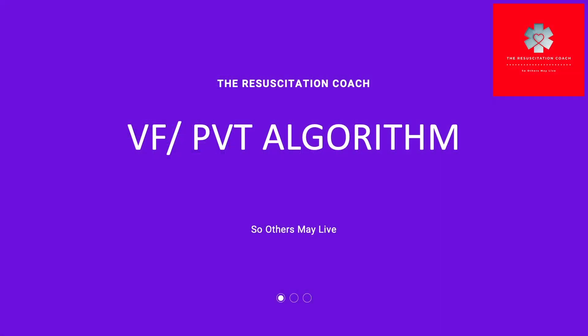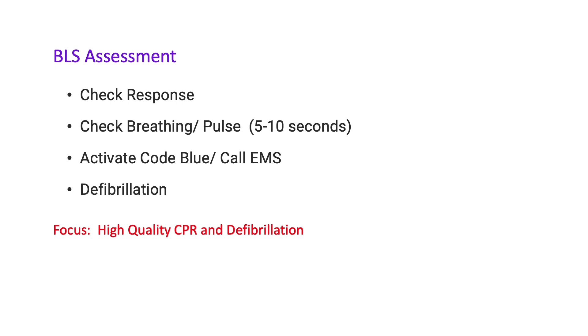If we respond quickly and effectively in VF or pulseless VT, we can significantly improve the patient's chance of survival. As always, we start off with our initial impression. If it appears the victim is unresponsive, go to your BLS assessment: check response — tap and shout, "Hey, hey, hey, are you okay?" Check breathing, check pulse for five seconds but no more than ten seconds. If you cannot find the pulse or the patient is not breathing, immediately activate the code blue and call your local EMS number.